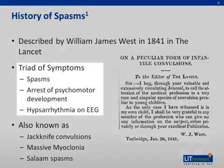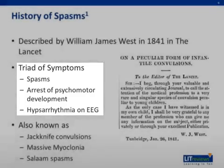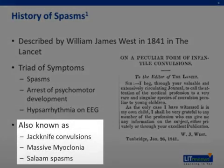These bowings and relaxings would repeat alternately at intervals of few seconds, repeated 10 to 20 or more times in each attack, which would not continue for more than two or three minutes. West syndrome became known as a triad of infantile spasms, arrest of psychomotor development, and hypsarrhythmia on EEG. Infantile spasms are also referred to as jackknife convulsions, massive myoclonia, or salam spasms.